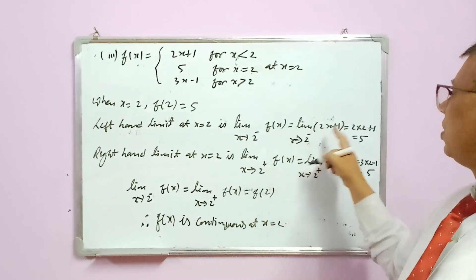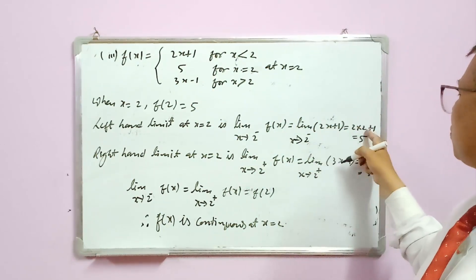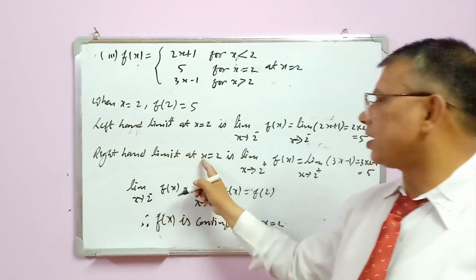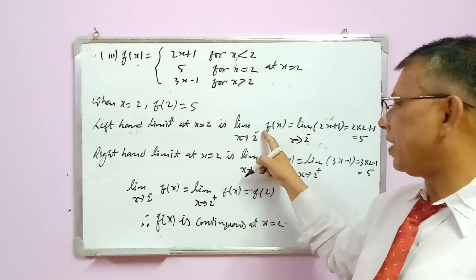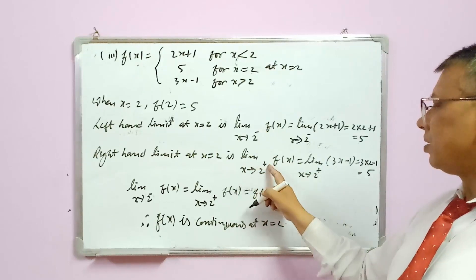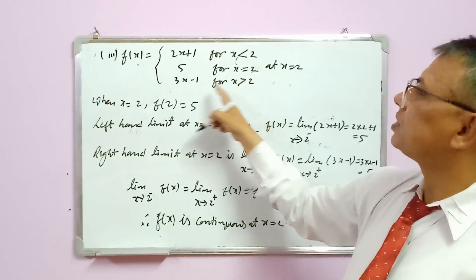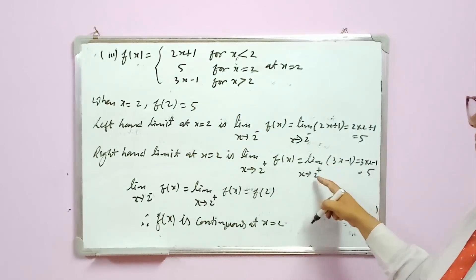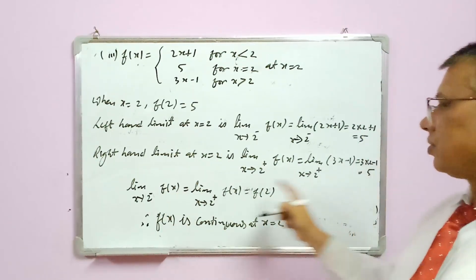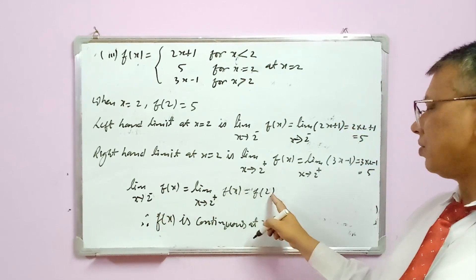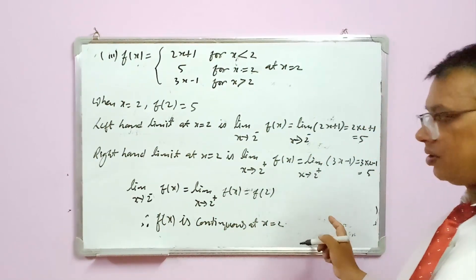Left-hand limit at x = 2: limit as x tends to 2⁻ of f(x) = 2(2) + 1 = 5. Right-hand limit at x = 2: limit as x tends to 2⁺ of f(x) = 3(2) - 1 = 5. Left-hand limit = right-hand limit = f(2) = 5. All three answers match, therefore f(x) is continuous at x = 2.